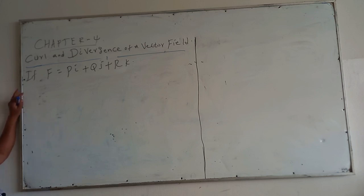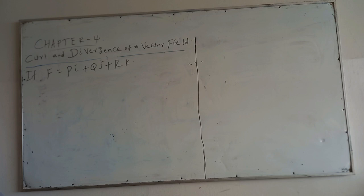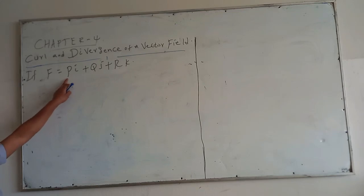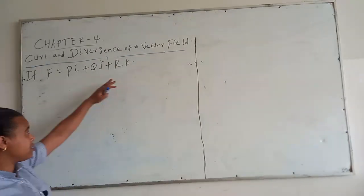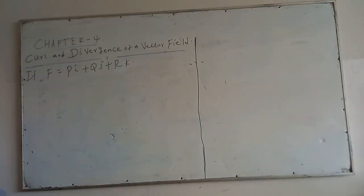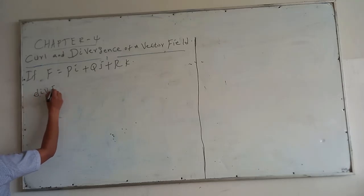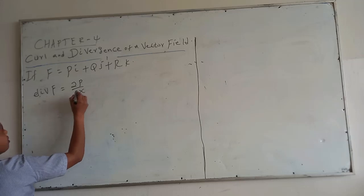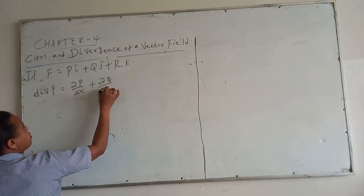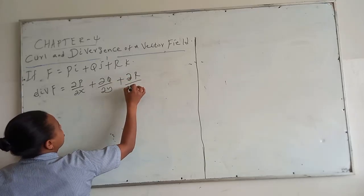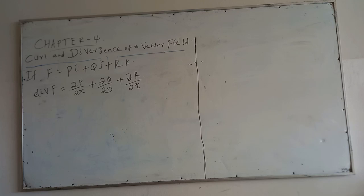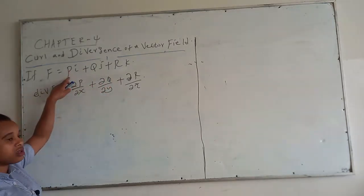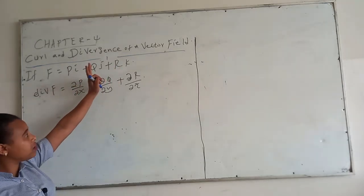Now, for the divergence of a vector field: if F is a vector field equal to p in i, q in j, and r in k, and the partial derivatives of p with x, q with y, and r with z exist, then the divergence of F equals partial of p with x, plus partial of q with y, plus partial of r with z.